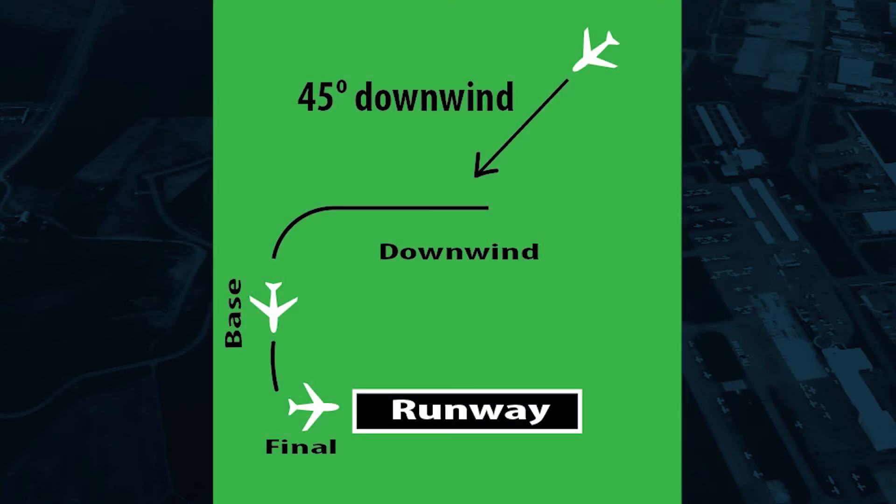To enter the pattern, pilots scan for traffic about two miles away and then descend to pattern altitude. They usually enter the pattern at 45 degrees on the downwind leg at midfield. It is important that we know where aircraft landing or taking off from an airport are. If we're monitoring the airport's frequency and someone announces they are downwind on whatever runway, we should know where that is with respect to where we are flying. Remember, it is always our responsibility to avoid any kind of contact with manned aviation.